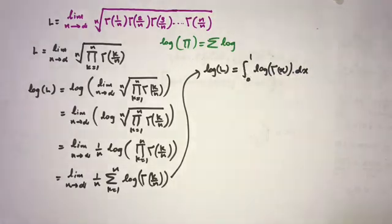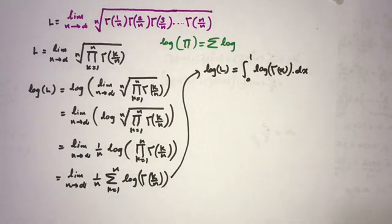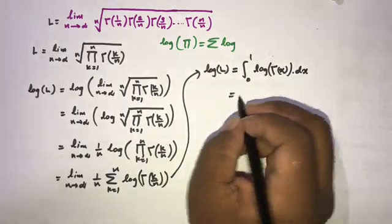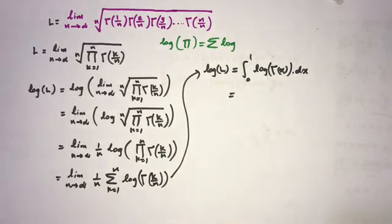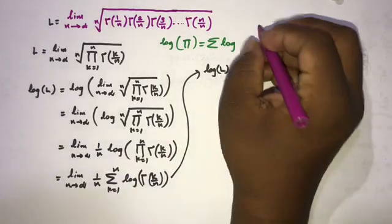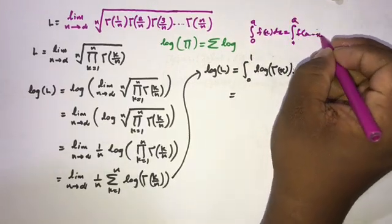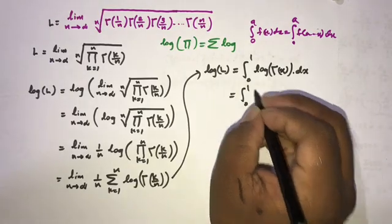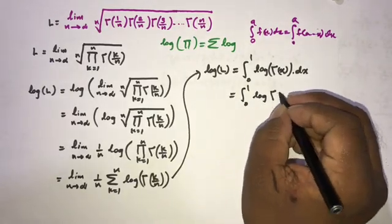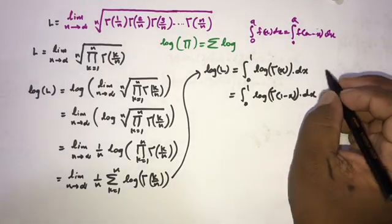This is a very interesting integral: the integral from 0 to 1 of natural log of gamma(x). To evaluate it, I'll use King's property of integration, which states that the integral from 0 to a of f(x) dx equals the integral from 0 to a of f(a minus x) dx. Applying this, we get the integral from 0 to 1 of natural log of gamma(1 minus x) dx, and we call this integral I.